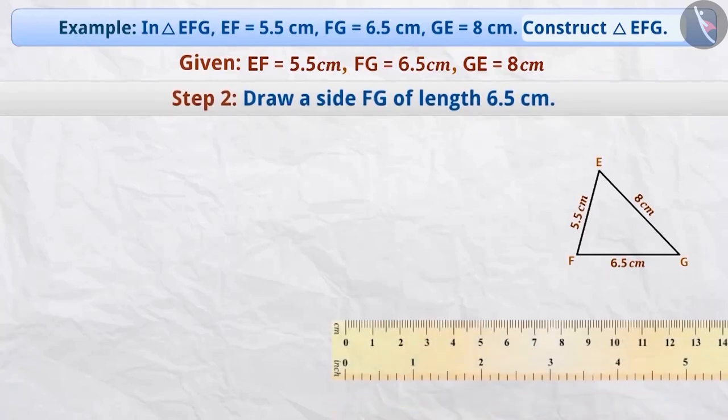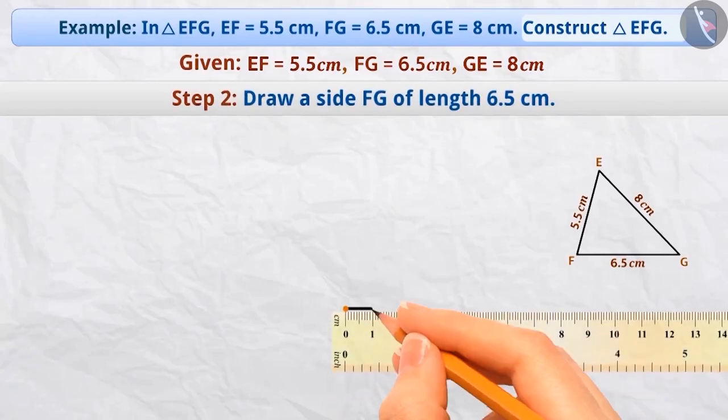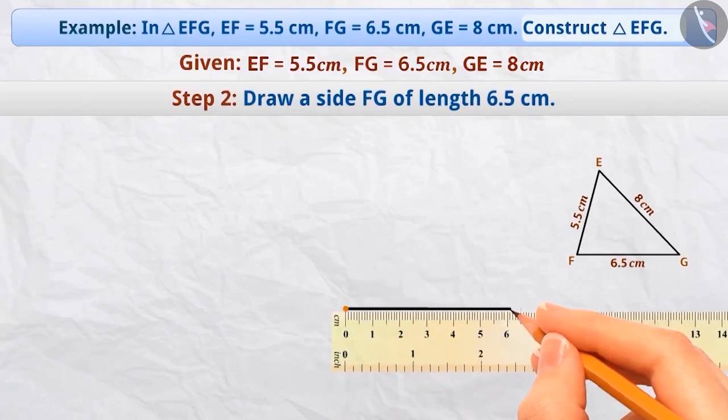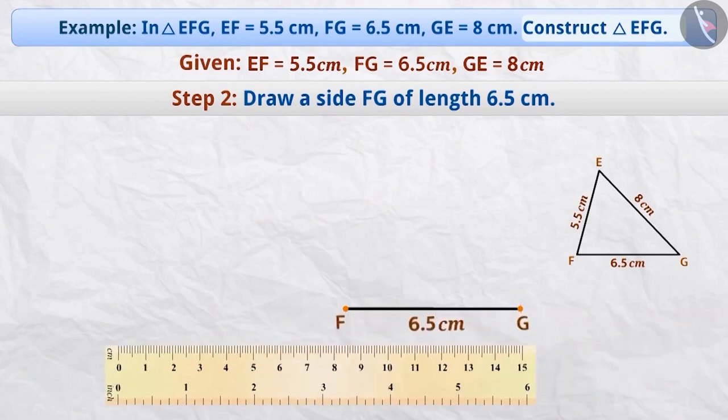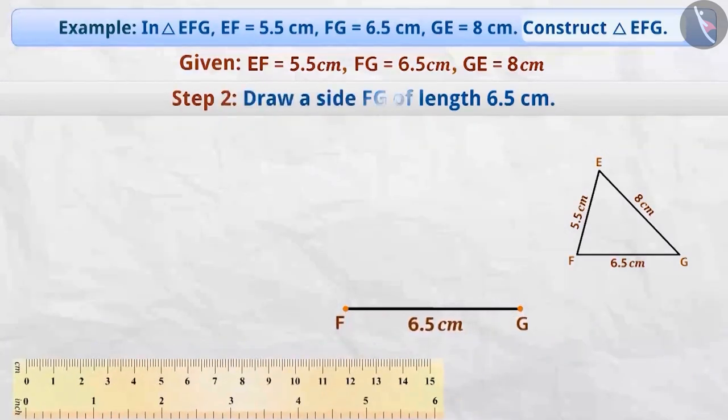Step 2: Now, with the help of a scale, we will draw a line segment FG of length 6.5 cm.